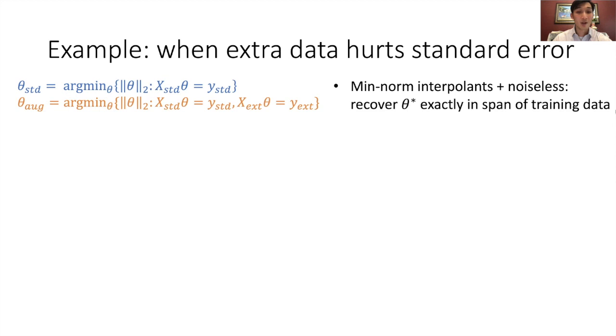With these ingredients, we can take a look at an example of when extra data hurts standard error. As min norm interpolants in a noiseless setting, the estimators recover theta star exactly in the span of their training data. Therefore, the error comes from the null space of the training data. So suppose the null space of the training data is E1 and E2, the standard bases. We plotted this null space with theta star projected into the null space. Theta standard, which is in blue, has zero component in this null space. This is because it fits theta star on the span of X standard, but is otherwise unconstrained. And thus the minimum norm inductive bias is to choose a solution with zero component in the null space of X standard.